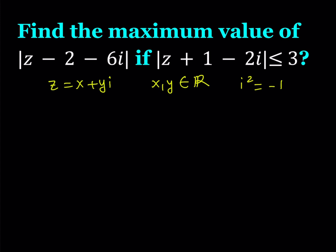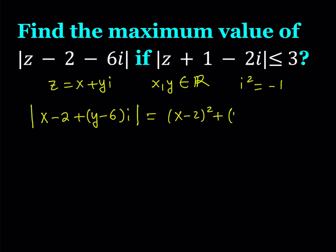You can replace z with x plus yi, and that would give you something like the absolute value of x minus 2 plus (y minus 6)i. Now you're talking about a complex number and its absolute value. How do you find the absolute value? You take the real part which is x minus 2, square that, then take the imaginary part which is y minus 6, square that, add them up, and take the square root.